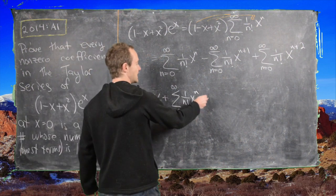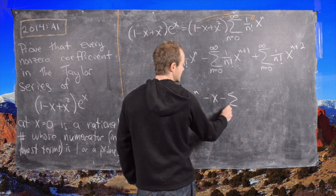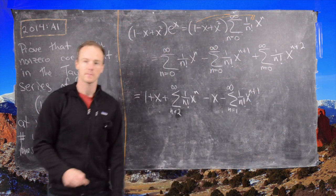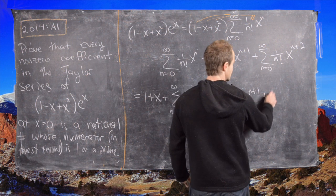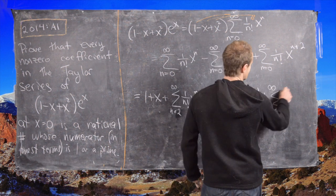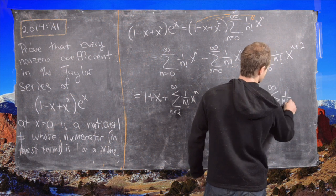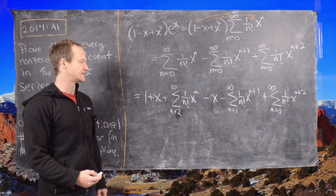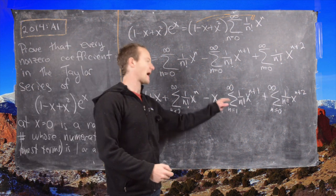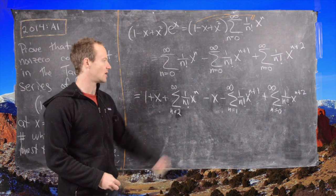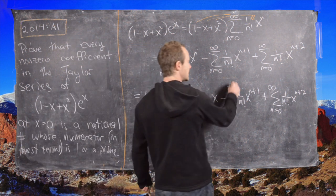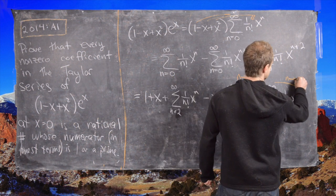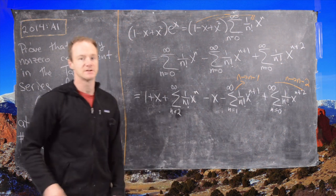Now we take out the first term of the second series: x minus the sum from n equals 1 to infinity of (1 over n factorial) x to the n plus 1. The last series is unchanged because it already starts at x squared. Now the next step is to re-index these three sums so they all have the same power of x — all into x to the n. In the second sum we replace n with n minus 1, and in the third sum we replace n with n minus 2. We also notice that the extracted 1 plus x and minus x terms cancel each other.